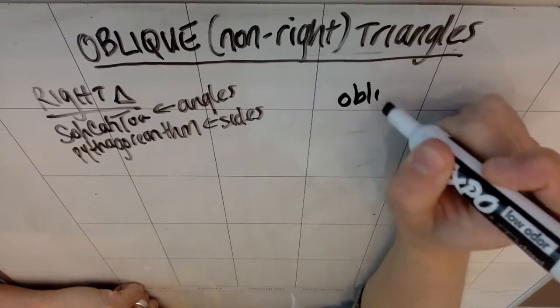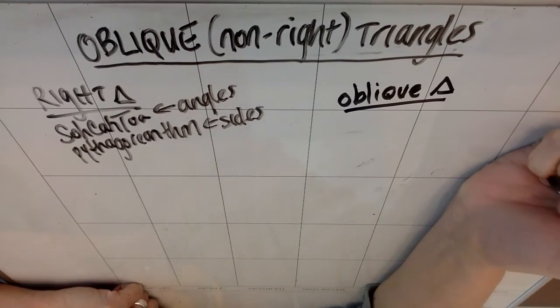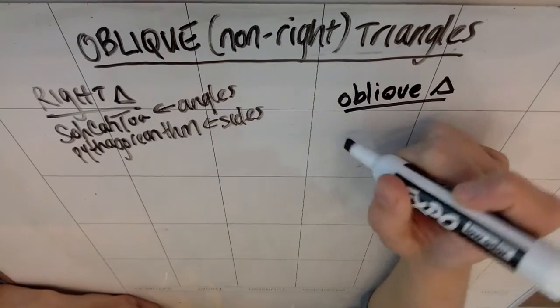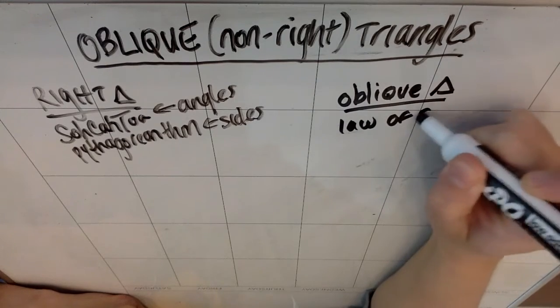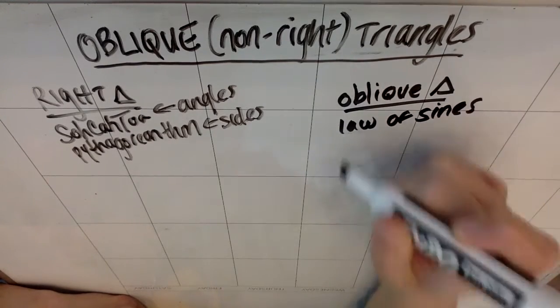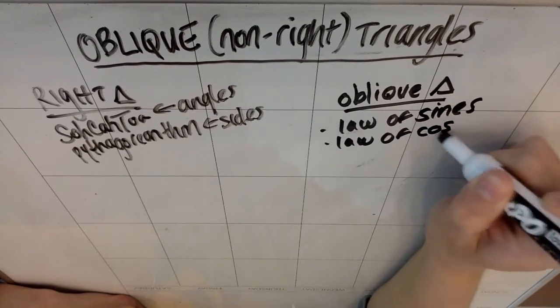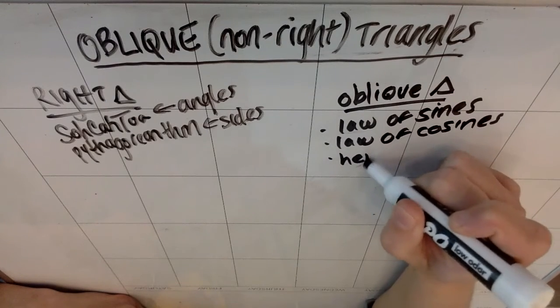So if you have an oblique triangle, what we're going to learn in this section and what we'll do moving forward are two rules. We're going to learn the law of sines, which involves using a sine function. We're going to learn the law of cosines.